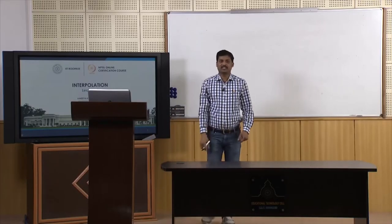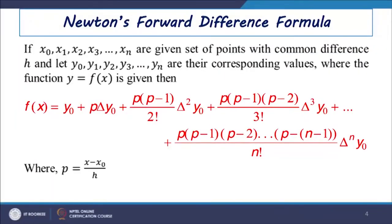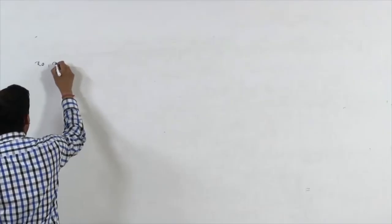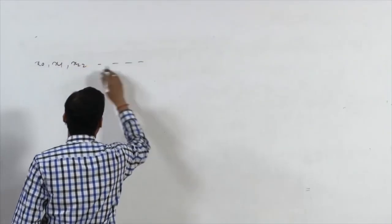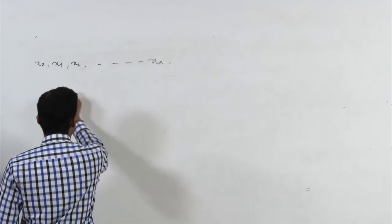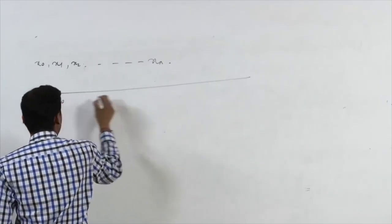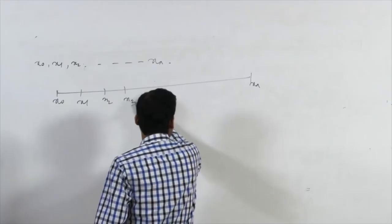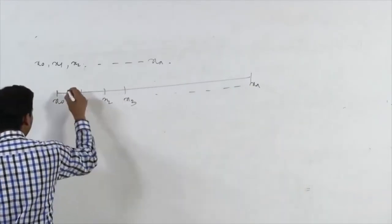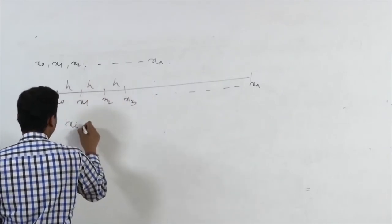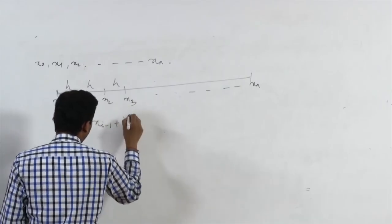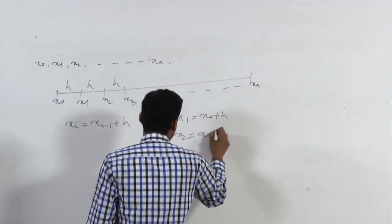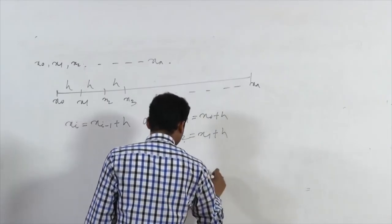Next we discuss Newton's forward difference formula. We use the set of tabular points x0, x1, x2 up to xn, where all tabular points from x0 to xn are equally spaced. This means xi = xi−1 + h, so x1 = x0 + h, x2 = x1 + h, likewise xn = x(n−1) + h.